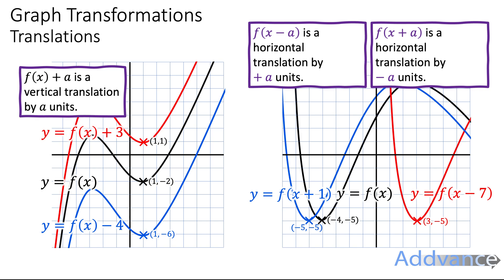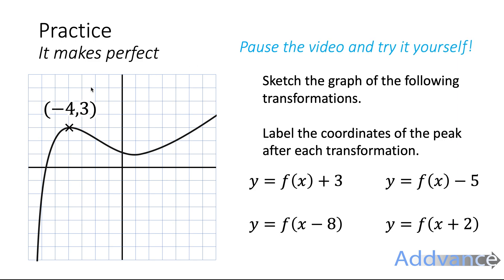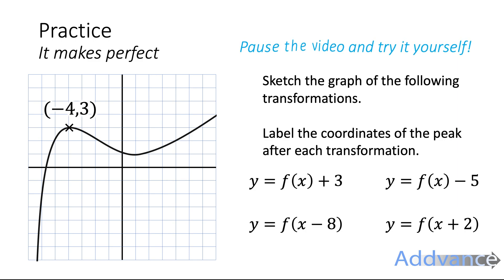You might want to screenshot this page or make a nice poster to remember this information. When you're ready, there are some practice questions for you to try. I'd like you to sketch the graph of these transformations and label the coordinates of the peak. This coordinate (-4, 3) — tell me where it moves to after each transformation. You might want to screenshot and print it, or copy it into your books and try sketching the graph yourself. Remember to label the new coordinates of the peak every time.